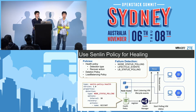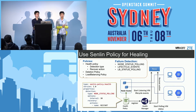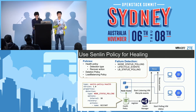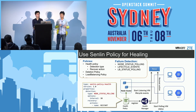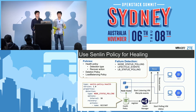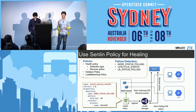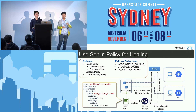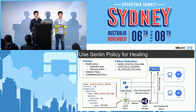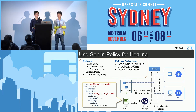We can attach many policies to a cluster. For auto-healing, I can attach a health policy, which supports three types of failure detection. First is node status polling: it checks the status of nodes in the cluster every period of time, and if any node is not active, it triggers a recovery action — which can be rebuild, restart, or recreate. It can also listen on virtual machine lifecycle events: when you power off or terminate a VM, Nova sends notification events to the message queue and Senlin listens for those events and triggers recovery. We can also leverage the load balancing service to monitor node status. That is the health policy in Senlin.